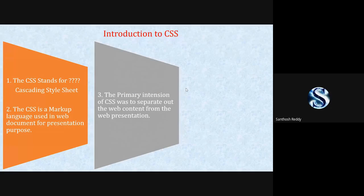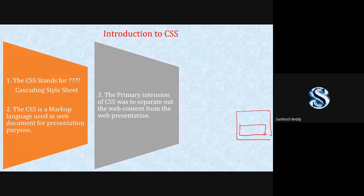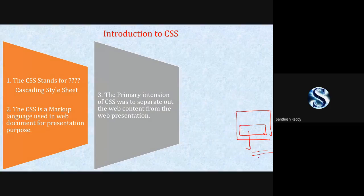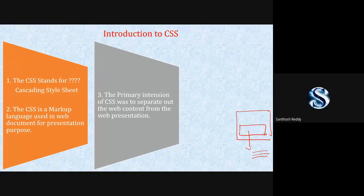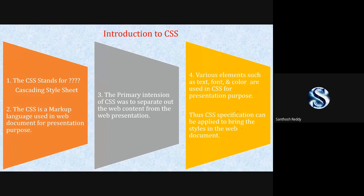The primary intention of CSS was to separate out the web content from the web presentation. For example, suppose I have a paragraph and for this paragraph I have some properties like font family should be Times New Roman, font color should be red, and background color should be orange. I cannot apply all of these directly to the paragraph tag, so I need to separate the content from the presentation — that is when we make use of CSS. Various elements such as text, font, and color are used in CSS for presentation purposes.